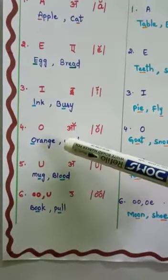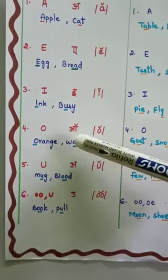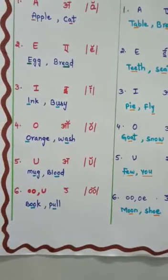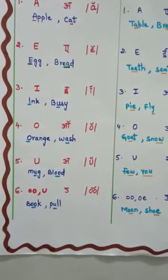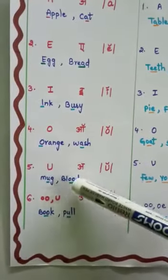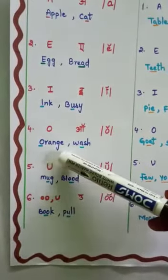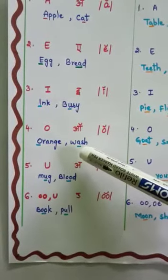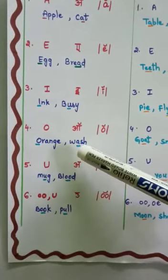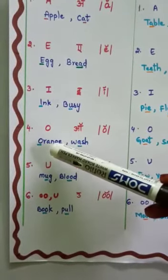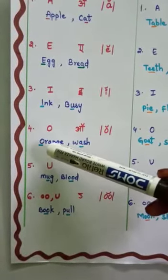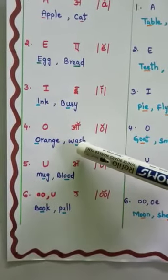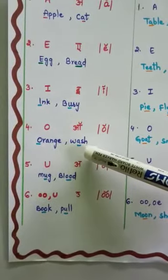Next is O. O makes the sound /ɒ/. Examples: orange and wash. Orange makes the /ɒ/ sound — orange. Wash also has the /ɒ/ sound. Can you see the difference?